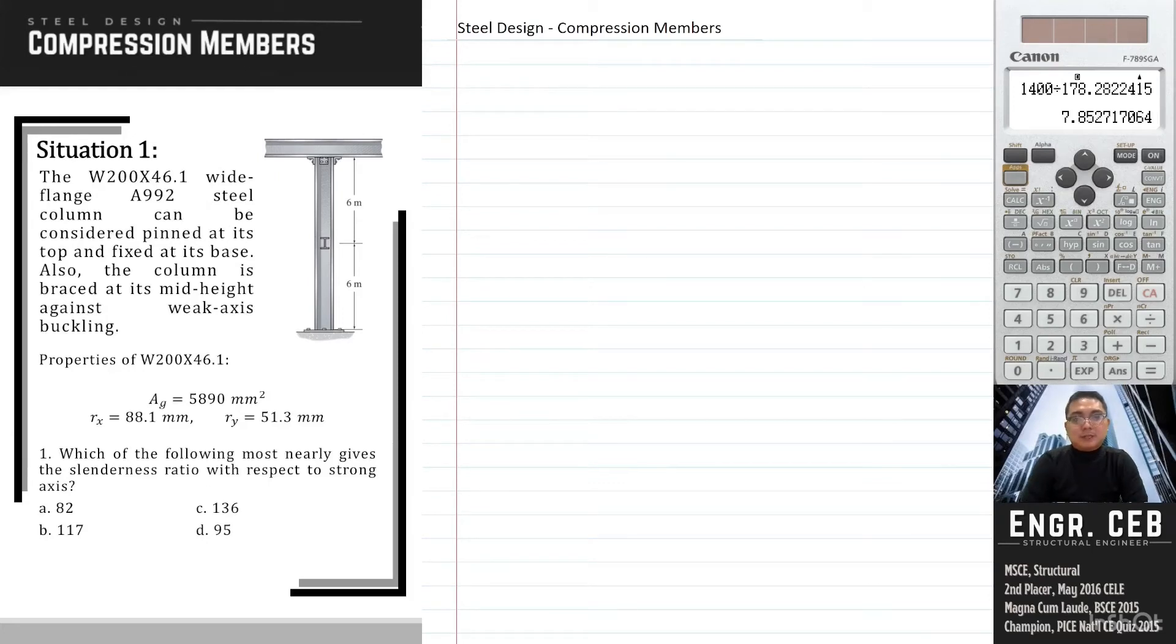Let us solve this problem about compression members. The W200 by 46.1 wide flange A992 steel column can be considered pinned at its top and fixed at its base. Also, the column is braced at its mid-height against weak axis buckling.